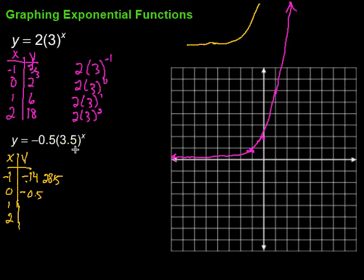Then, 1, so 3.5 to the first power would just be 3.5. Multiply that by negative 0.5, which is going to give me negative 1.75. And, finally, we take 3.5 to the second power, we square it, multiply that by negative 0.5, and I get negative 6.125.